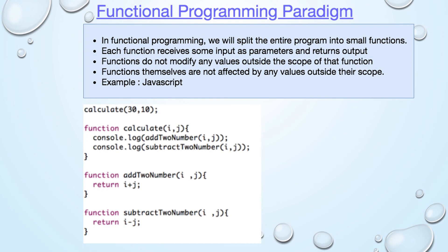Functional programming. In functional programming, we will split the entire program into functions. Each function takes some parameters as input and returns the output. Javascript is one example of a functional programming language. Here, in the example, we have three functions.